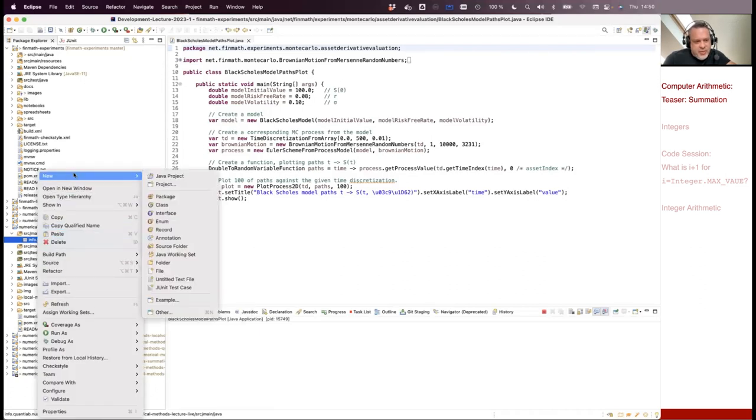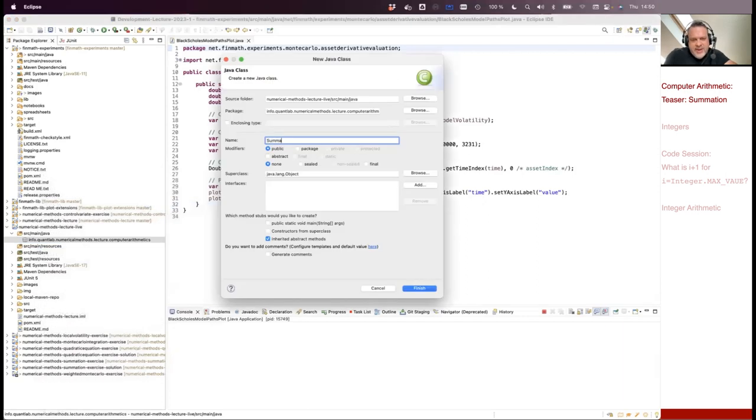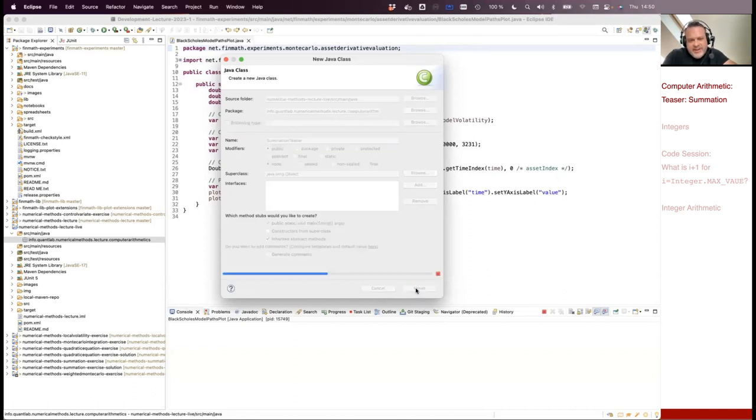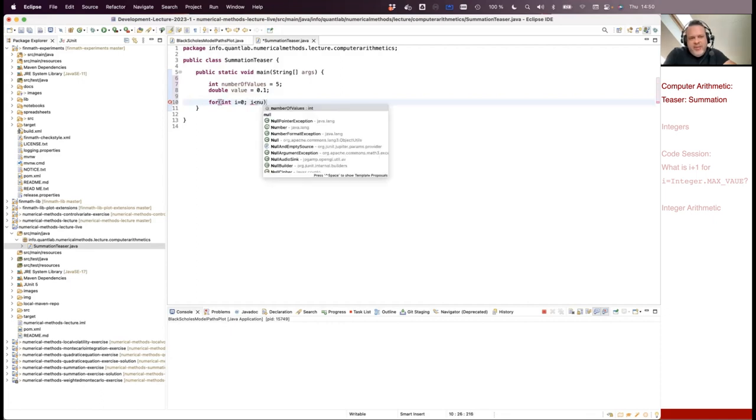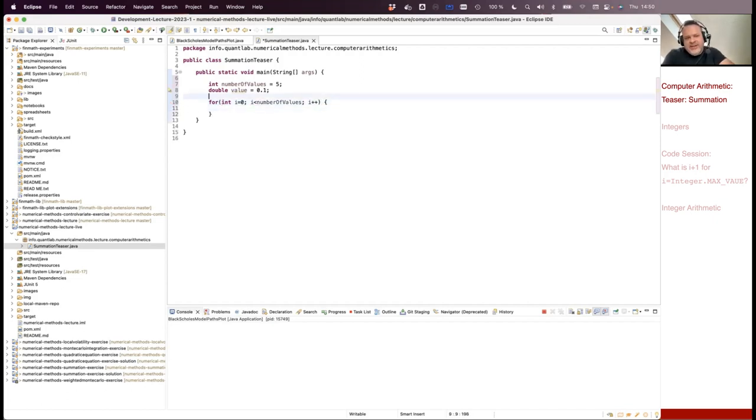So I create here a new class. Let's call it summation teaser. We will have a more detailed summation experiment in the next session. And I just want to calculate a sum of some values. So how many values I like to add? Maybe just five values. And maybe I like to add always the same value. So let's take 0.1. So I run now from 0, 0 less than number of values. So the programmer always likes to start in 0. And I calculate now a sum.